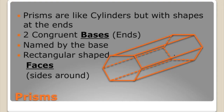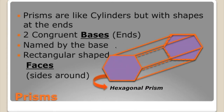This one would be called a hexagonal prism because it has a hexagon for the base. A hexagon has six sides — one, two, three, four, five, six — and because it has six sides, it's a hexagonal prism with six rectangular faces. As the number of sides increases around the prism, each of the rectangles gets smaller.